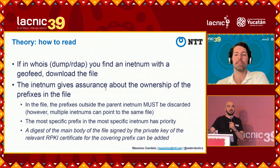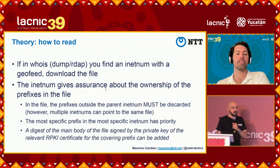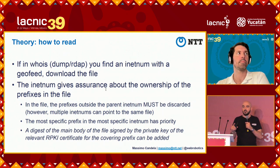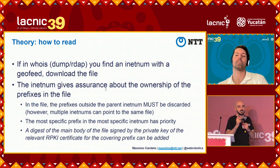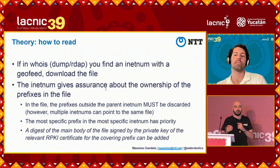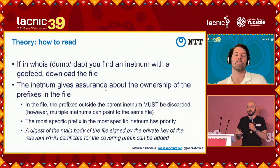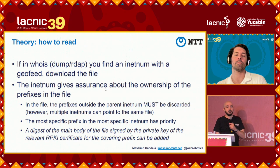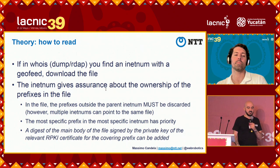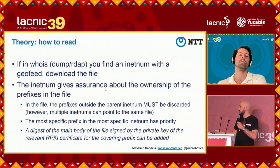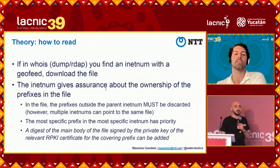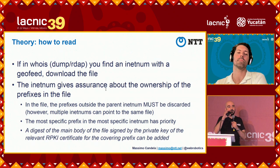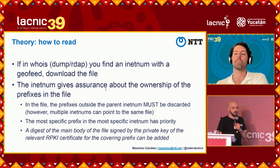The hierarchy introduced by the inetnum itself means that if you have customers with their own inetnums, they can link their own geofeed file and manage their own geolocation. There is also an optional extra step: you can sign the individual geofeed file with the relevant RPKI certificate covering the prefix. This provides an additional validation step beyond trusting the RIR portal authentication. Currently this is not common, but it is available.